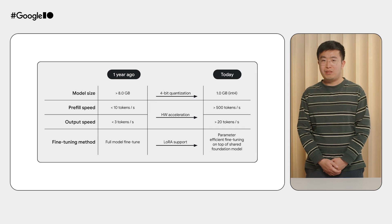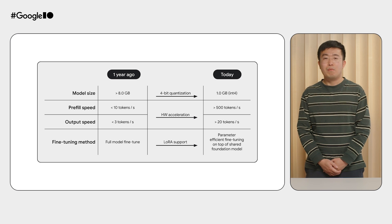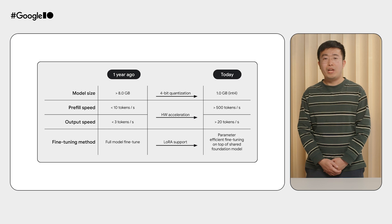Here is a breakdown of what it took: 4-bit quantization-aware training drastically reduced Gemini Nano's footprint. Close partnerships with major SOC providers enabled Gemini Nano to leverage dedicated AI accelerators, boosting speed and efficiency. Parameter-efficient, hot-swappable LoRA support allows multiple apps to fine-tune Gemini Nano for specific use cases while sharing the foundation model in memory and on disk. Along the way, we also developed various tools to aid model transformation and target accelerator optimization.